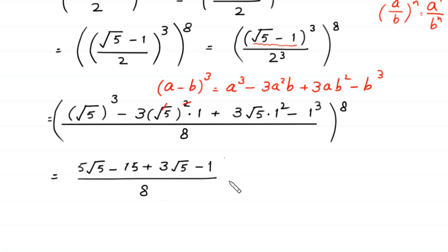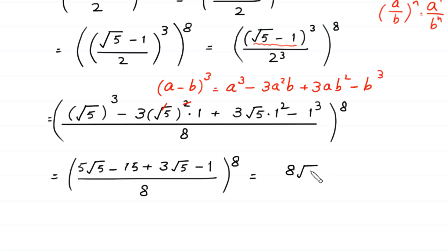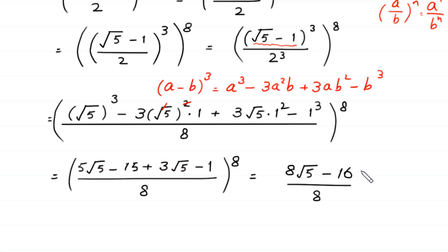Next, square root of 5 cubed is 5 times square root of 5; square root of 5 squared is 5, so 3 times 5 equals 15; and 3 times square root of 5 remains. So we have 5 times square root of 5 minus 15 plus 3 times square root of 5 minus 1, divided by 8, whole to the power 8. We can factor out 8: 8 times square root of 5 minus 16, divided by 8, whole to the power 8.